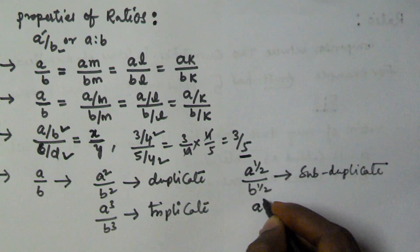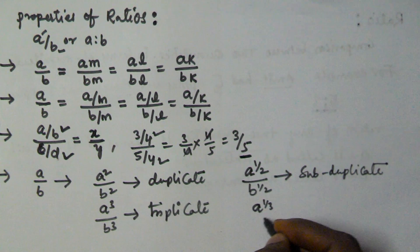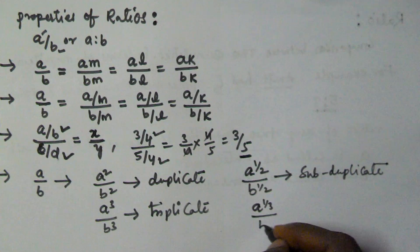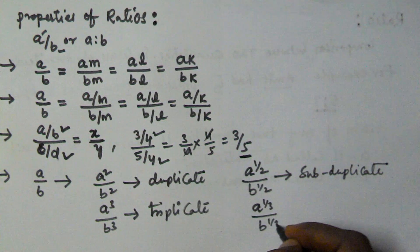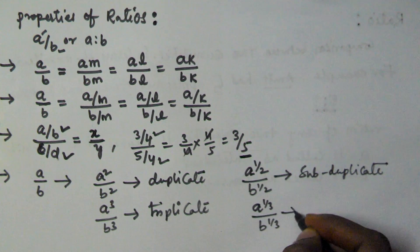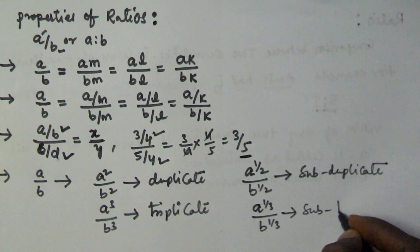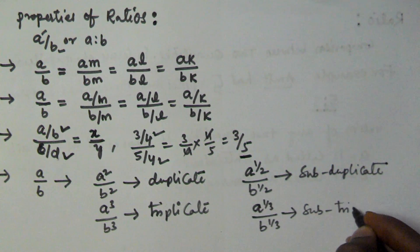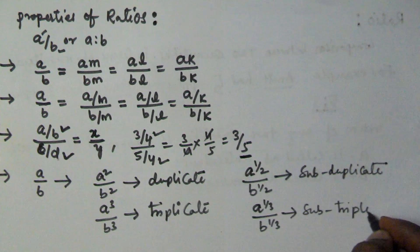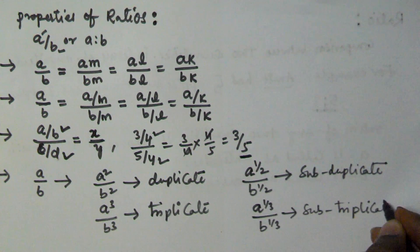And A to the power of 1 by 3 by B to the power of 1 by 3 is called the subduplicate ratio.